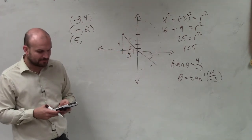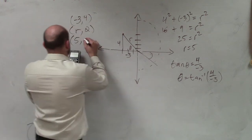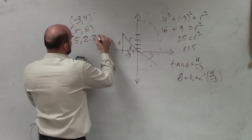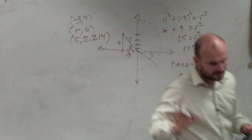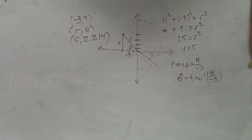So when I add my answer to pi, I get 2.214. And that is going to be my angle and my radius for my polar coordinate.